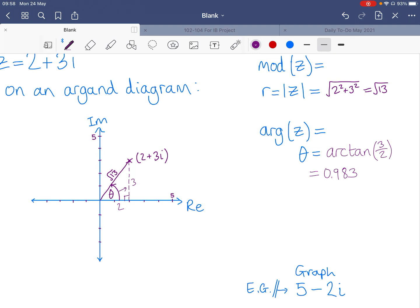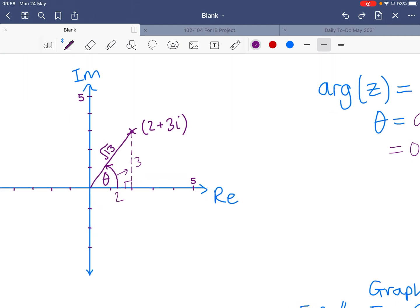Half pi would be around there. That would be around 1.5 something. So, 0.98 seems about right for this angle. So we will come to express it in terms of this root 13 and this 0.983 in a later video.